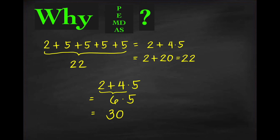But if we don't follow PEMDAS and perform the addition before multiplication, we get 2 plus 4 equals 6, then 6 times 5 equals 30, which is not equal to 22. Therefore, this is an incorrect solution.